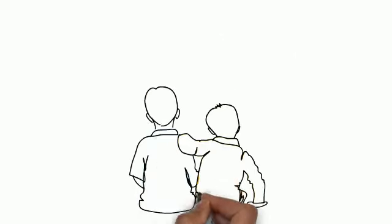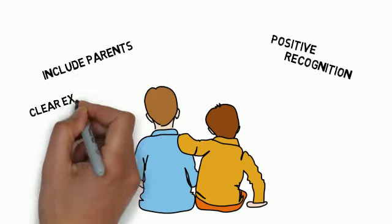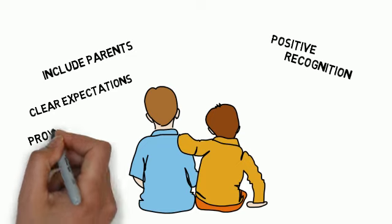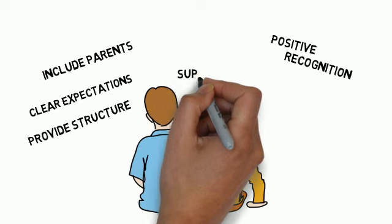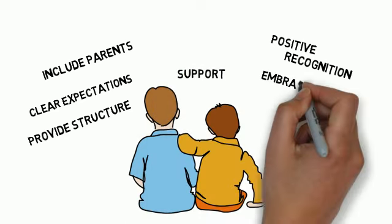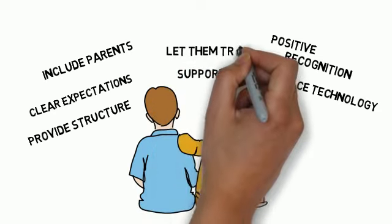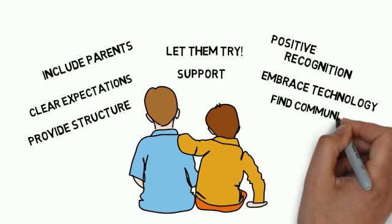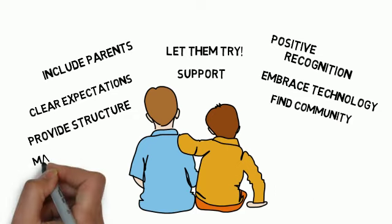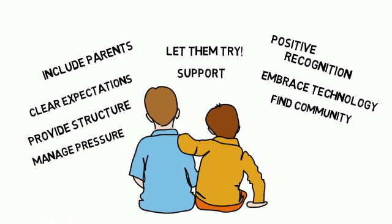The recap of this video includes positive recognition when appropriate, include parents when necessary, clear rules and expectations, emphasize time on task. Help them develop realistic plans to achieve goals, support them if things go awry, embrace technology and social media. Students will want to create large campus-wide programs and attempt to reshape campus life. Let them try. Be aware of groupthink, provide structure, help them find community. Help them manage pressure, develop realistic expectations for their capacity for work, watch for burnout, and refer when necessary.